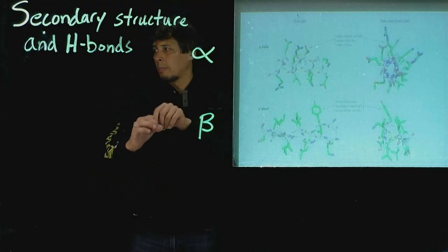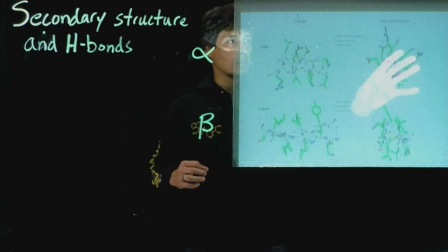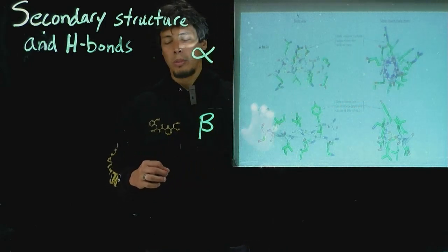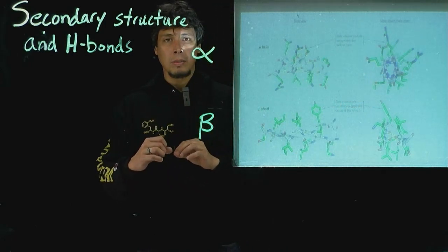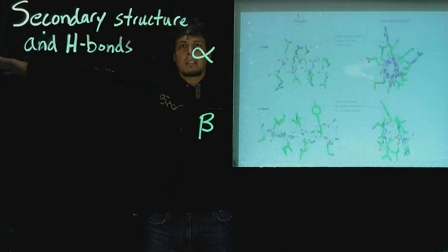So again remember that down the barrel of the alpha helix there isn't any space. And so you can kind of see this in the stick figure looking down the barrel of an alpha helix. But what's important about the side chains is that they stick out from the sides of the cylinder.